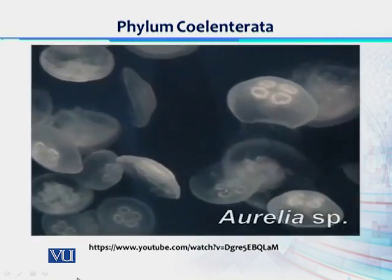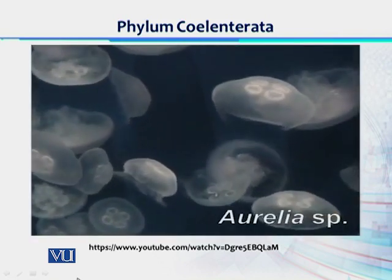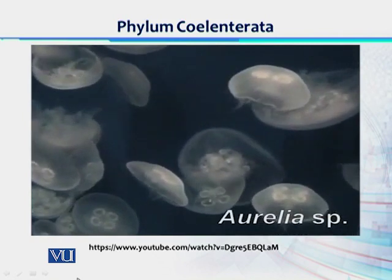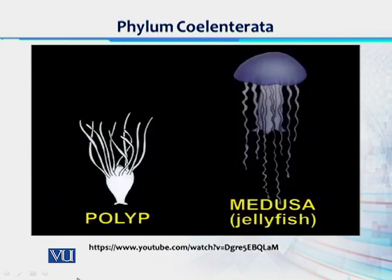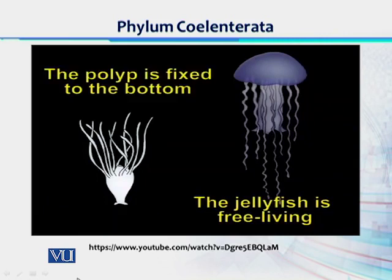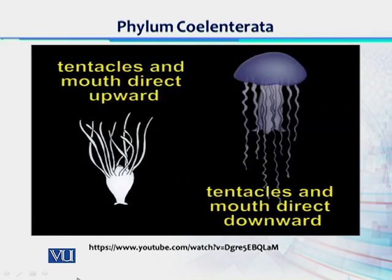How do jellyfish reproduce? Let's see the moon jelly life cycle. The life cycle of cnidarians shows two main stages: the polyp and the medusa, or jellyfish. The polyp lives attached to the bottom, while the jellyfish is free-swimming. The polyp presents its mouth and tentacles directed upward, while in jellyfish they are directed downward.